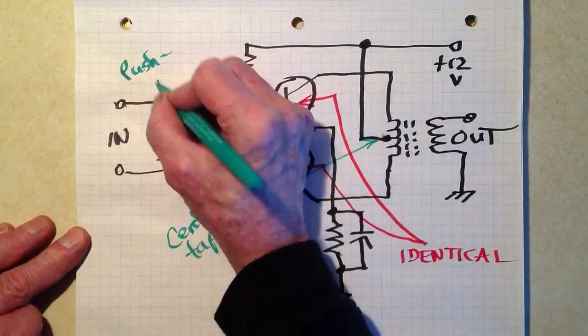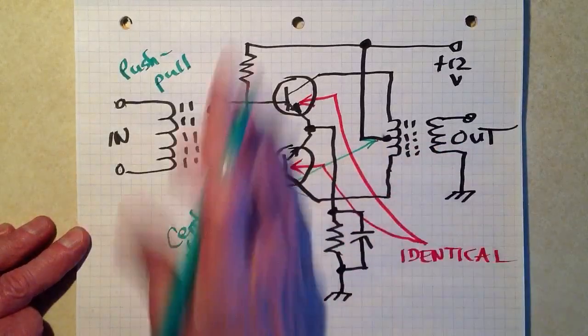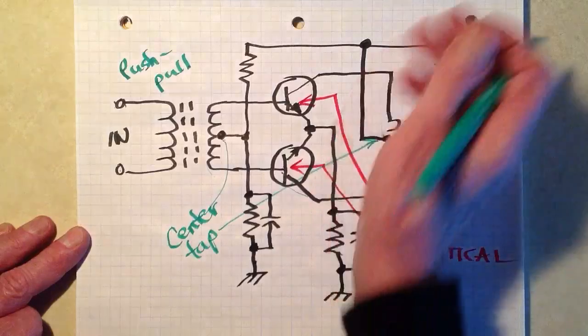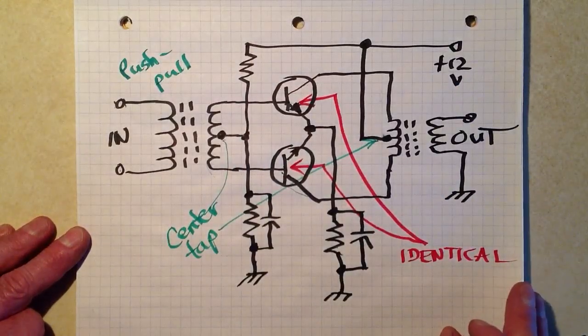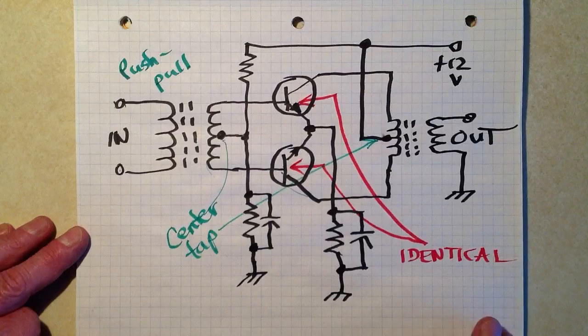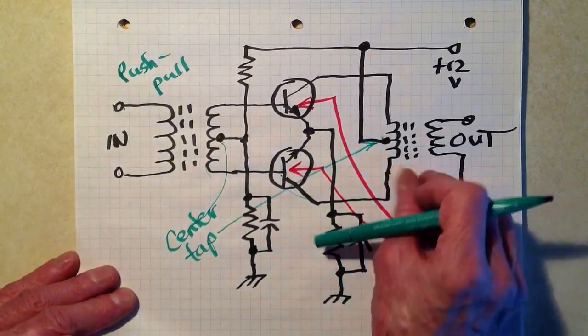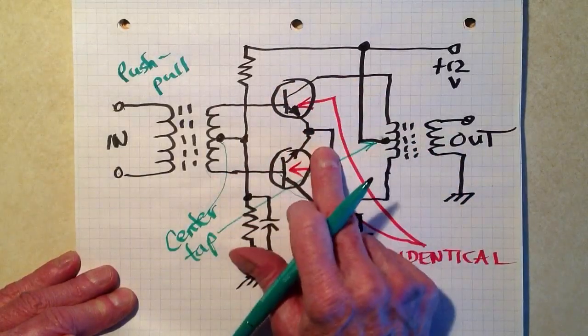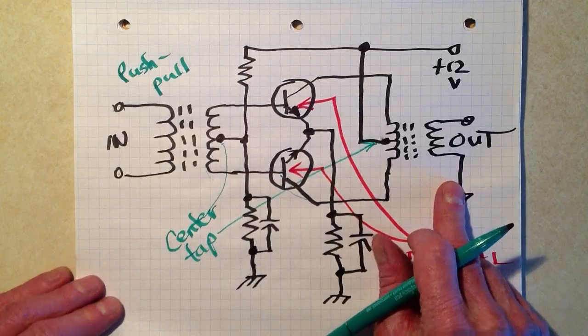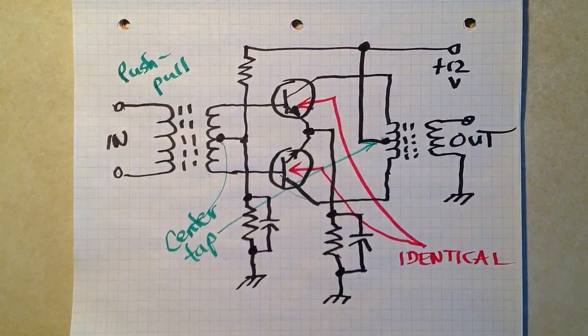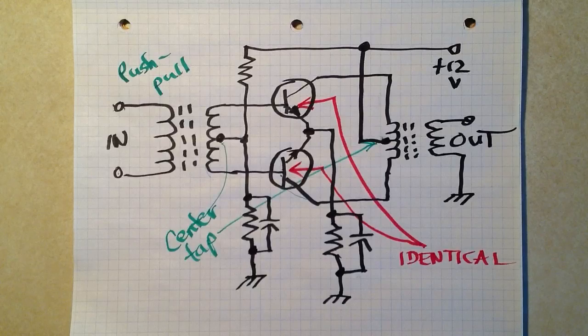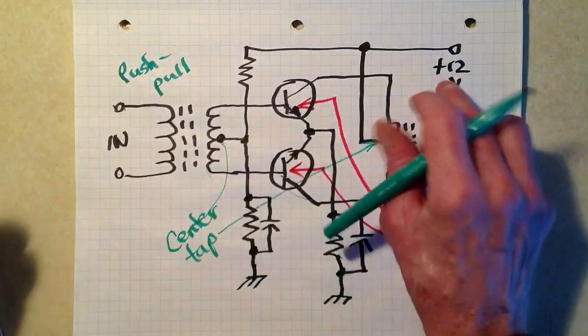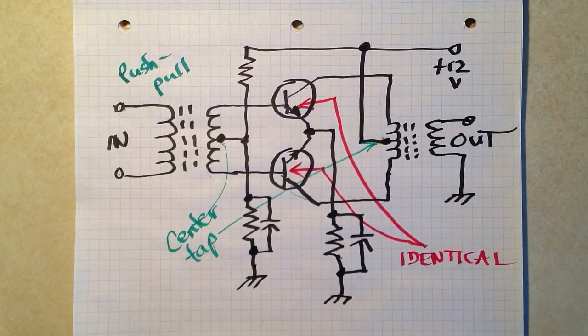This is called a push-pull circuit because it sort of pushes and then pulls. One half of the cycle you might think of as push, the other side as pull. So then the output here will probably go to a fairly large speaker, and this transformer will be designed in such a way as to match the impedance output of these transistors to the impedance of the speaker that you use. Then you'll get a good loud audio signal from that little crystal set radio receiver. But you will need a power supply here. You can't just run it off the antenna alone.